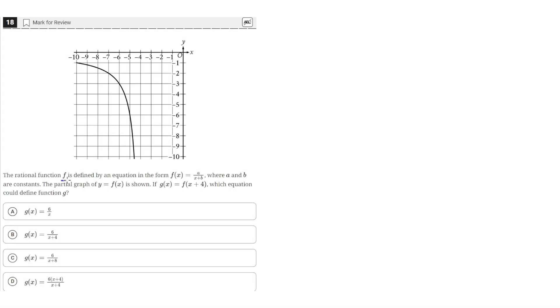The rational function f is defined by an equation in the form f(x) equals a over x plus b, where a and b are constants. The partial graph of y equals f(x) is shown. If g(x) equals f(x) plus 4, which equation could define g?